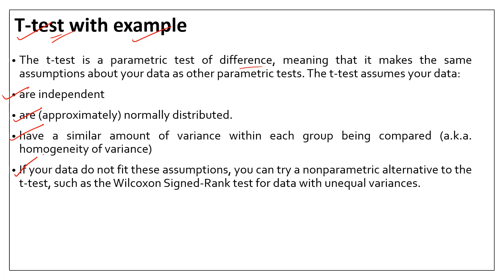If these parametric assumptions are fulfilled, then we can proceed with the t-test. The t-test is performed for two samples. There are two different types of t-test: one is called the independent t-test and another is called the paired t-test.